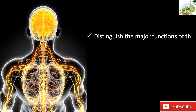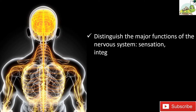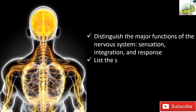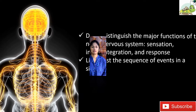By the end of this section you will be able to distinguish the major functions of the nervous system — sensation, integration, and response — and list the sequence of events in a simple sensory receptor to motor receptor pathway.